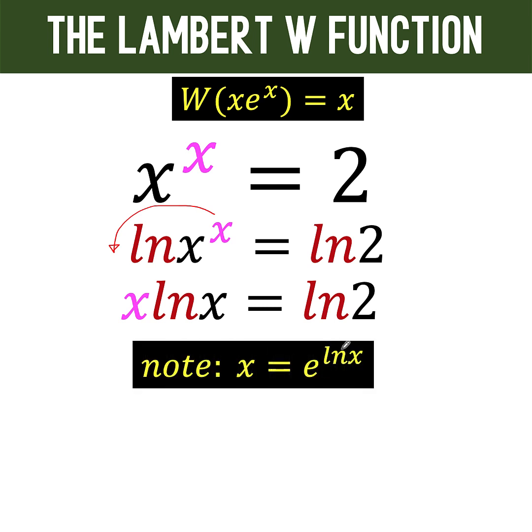Next, let's note that e raised to ln of x is just x because e and ln are inverse operations that can cancel each other out, thereby leaving only x as the value of the right side. Because of this, we can now replace this x by the right side here to arrive at e raised to ln of x times ln x equals the right side, ln of 2.